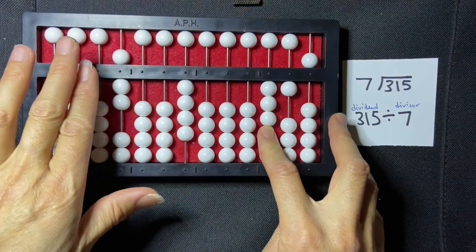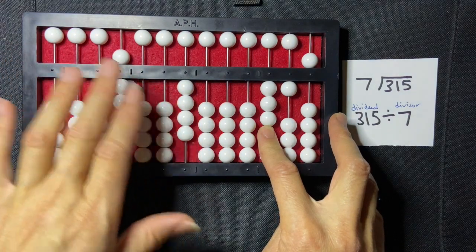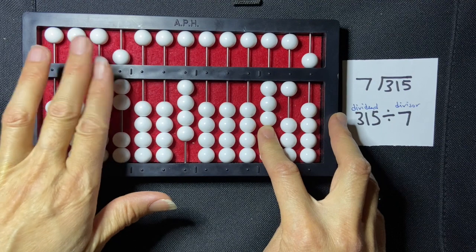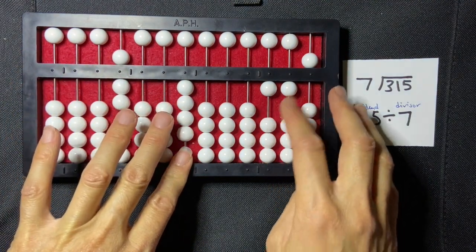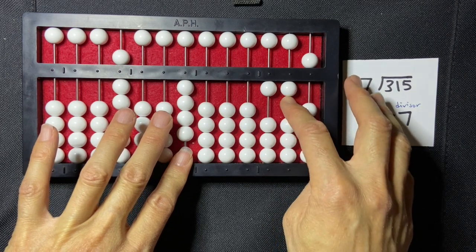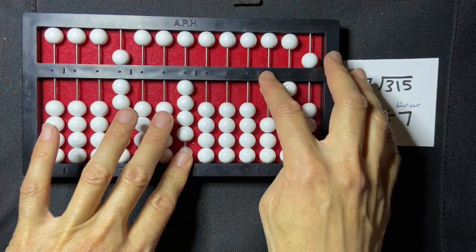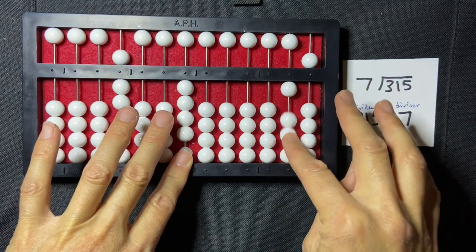And I'm going to say 4 times 7 is 28, so I have to subtract 28. So there's the 20, and I can't subtract 8 directly, so I'm going to subtract 10, and then I'm going to return 2.